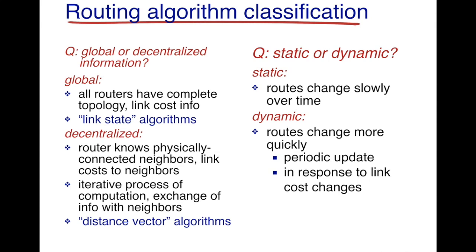The other approach is decentralized. For a centralized algorithm collecting global information, the biggest hurdle is collecting all that information. In a decentralized approach, every router only knows the cost of its physically connected neighbors, and then through an iterative process of exchanging information with its neighbors, it collects information about all other nodes and links in the network and uses this to locally determine its forwarding. These algorithms are decentralized, and the one we will study is the distance vector algorithm.